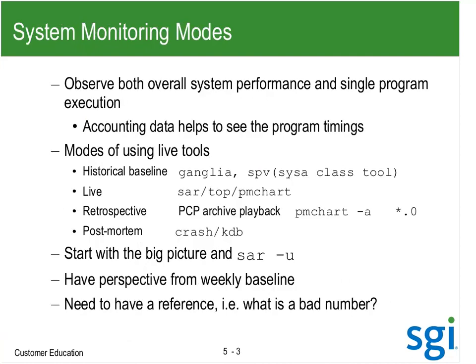I've kept onto it for a year and now it's getting integrated into Performance Suite. When I'm looking at the system, I've got two perspectives: the overall system activity and then on a per-process, single-program execution. SAR and PCP are telling me what the system's doing but not whether I'm getting any work done.